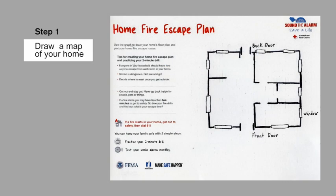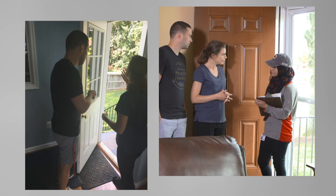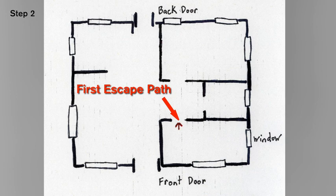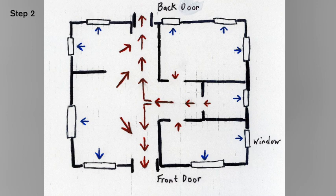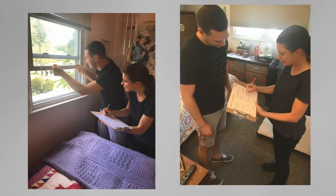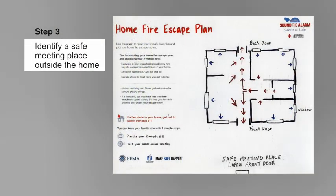Step 1: The first thing we need to do is draw a map of your home — remember to show all rooms, doors, and windows. Once you've clearly identified all of your rooms, doors, and windows, you can identify the two main exits of your home. Make sure that your two main exits are always free of obstructions such as furniture, allowing for a quick escape. What's the quickest way to get out of the room? This would be your first escape path. Now we need to identify your second escape path — let's mark that on your home fire escape plan using an arrow.